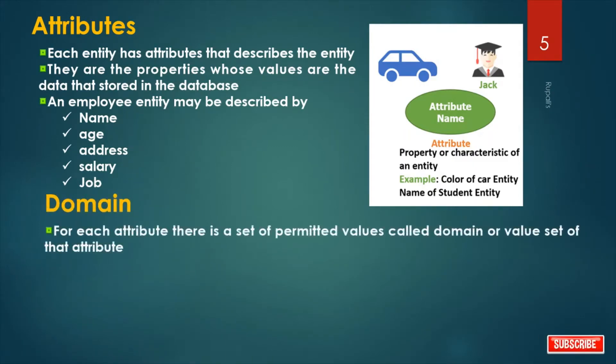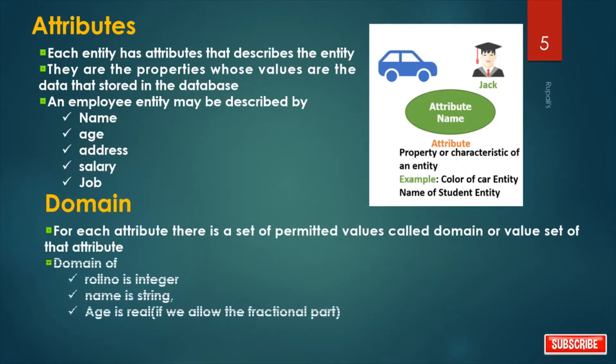Domain. For each attribute, there is a set of permitted values called domain or value set of that attribute. So in case of roll number, it is always integer. So domain of roll number is integer. For name, it is always string. For age, it is real if we allow the fractional part.